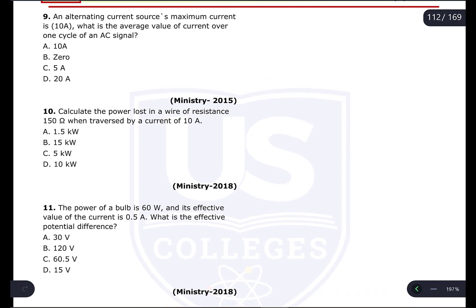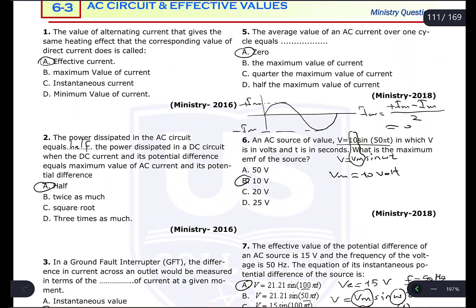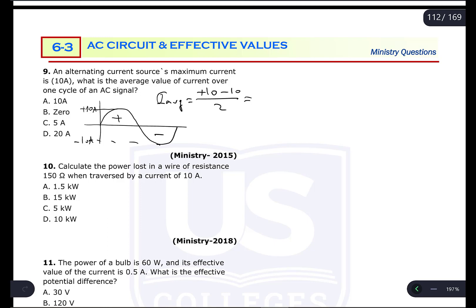Question number nine: an alternating current has maximum current of 10 amperes. What is the average value of the current over one cycle of the AC signal? Similar to question five, in one cycle there is one positive and one negative half. The current changes between +10 A and −10 A, so the average value is (+10 + (−10)) / 2 = 0.